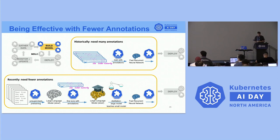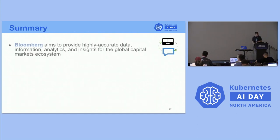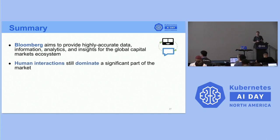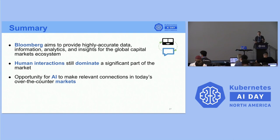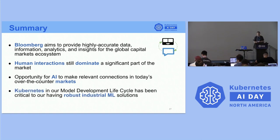One solution is model distillation: the large model acts as a teacher to a small model, generating training data for it. The small model is the kind of recurrent neural network deployed historically — with millisecond latency. This lets you work with far fewer annotations overall. The longer pipeline that results makes robustness and reproducibility even more important. And working with large models means Kubernetes and the ability to scale in multi-GPU, multi-machine environments becomes critical.